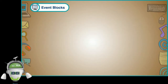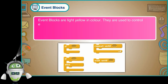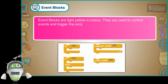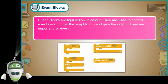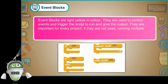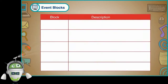Event Blocks are light yellow in color. They are used to control events and trigger the script to run and give the output. They are important for every project — if they are not used, running multiple scripts at a single time is difficult. They are used for both sprites and backdrops.